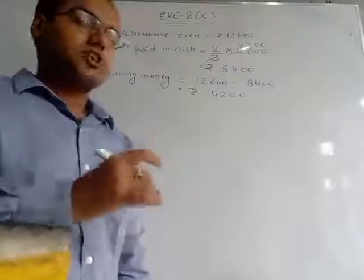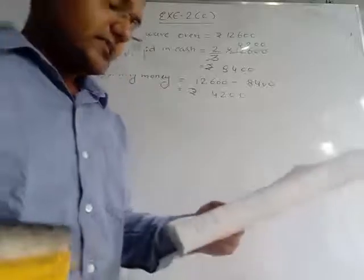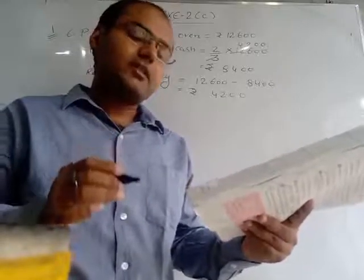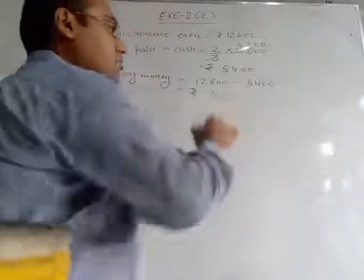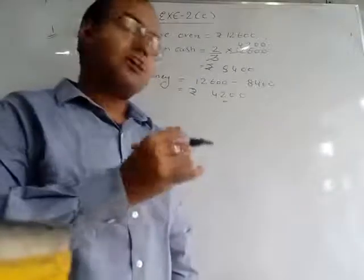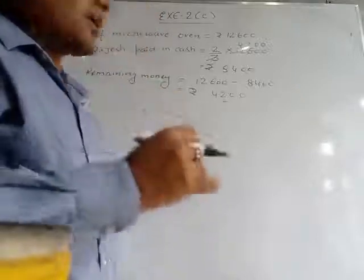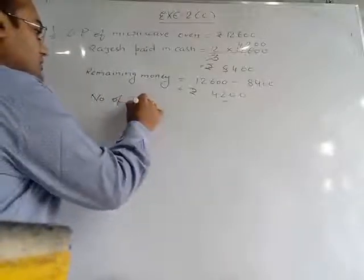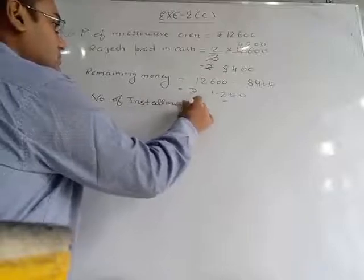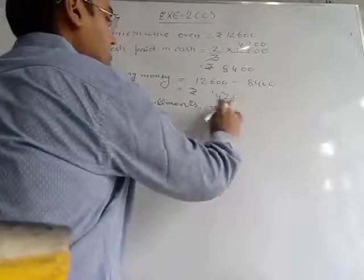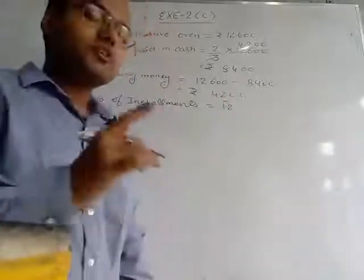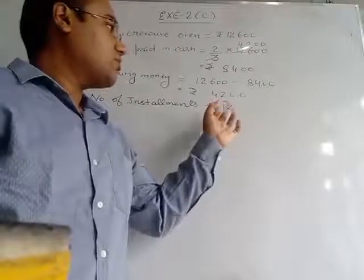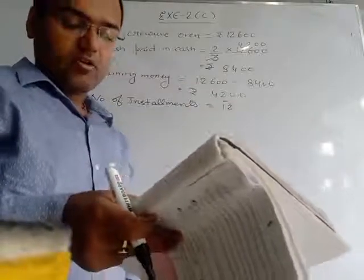This much money is still remaining which Rajesh has to pay. The rest of the money he paid in 12 equal monthly instalments. So this remaining amount he did not give in a single payment — he gave a few amount 12 times. We have to find the amount of each monthly instalment.